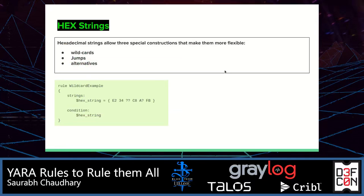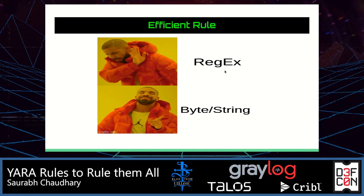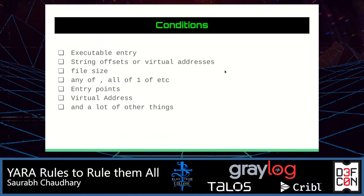Hexadecimal strings allow three special constructions that make them more flexible — wildcards, jumps, and alternatives — and we will focus our rule writing more on hexadecimal strings than normal ASCII strings. For regex, it is not recommended for writing efficient YARA rules because it comes with a lot of false positives. So we will try to avoid regex. Write rules, but do not include much regex because it will give you a lot of false positives — an efficient rule doesn't use regex.